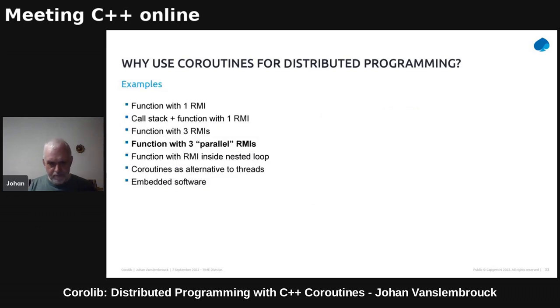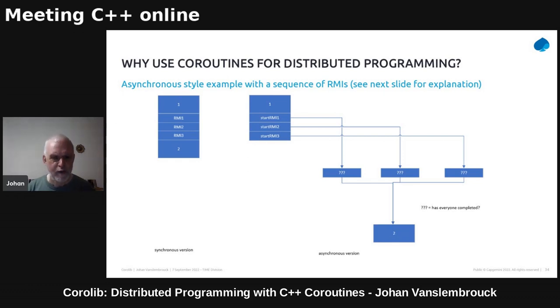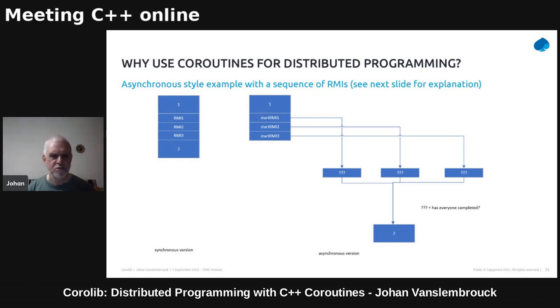Suppose you have a function with three remote method invocations — one, two, and three. You can start them in parallel. But with a blocking synchronous implementation it won't work, so you have to add up those delays for each of them. When you start them in parallel in an asynchronous way, you can start the second and third one, then when the replies are received you can check if all replies have arrived.